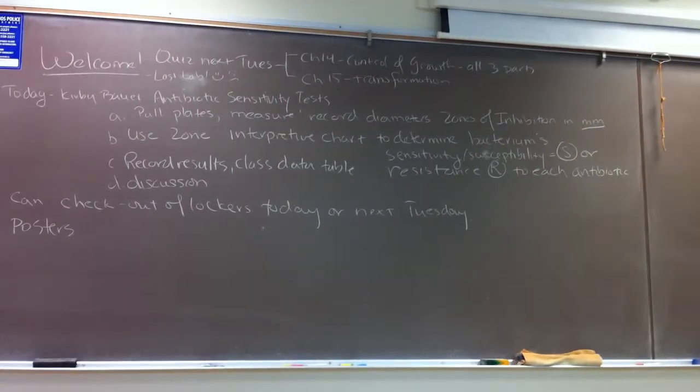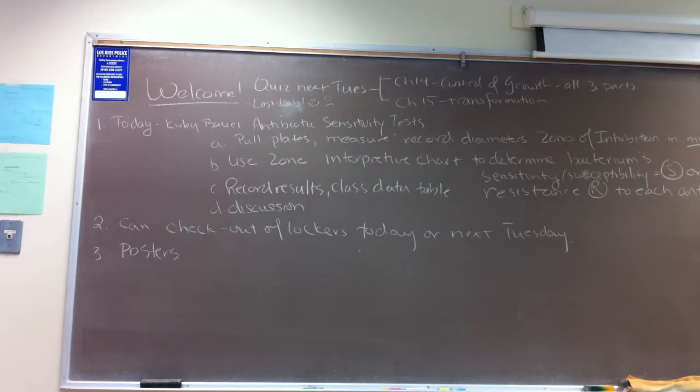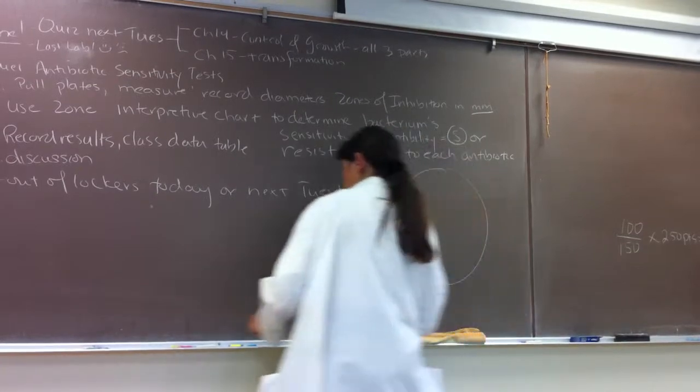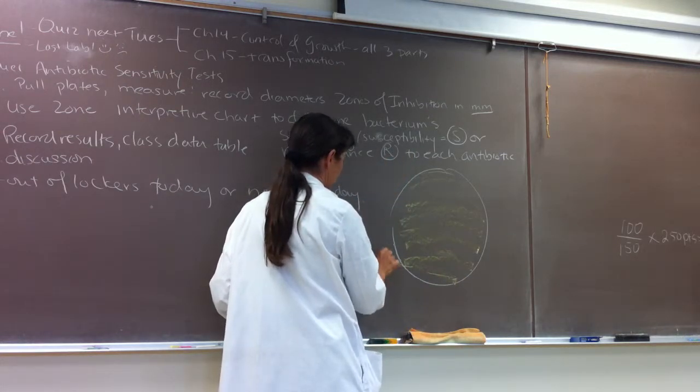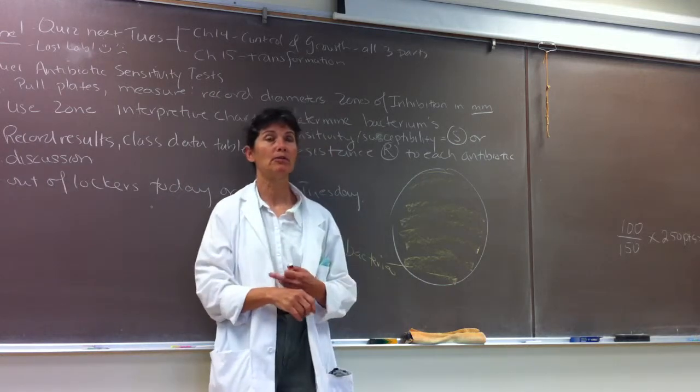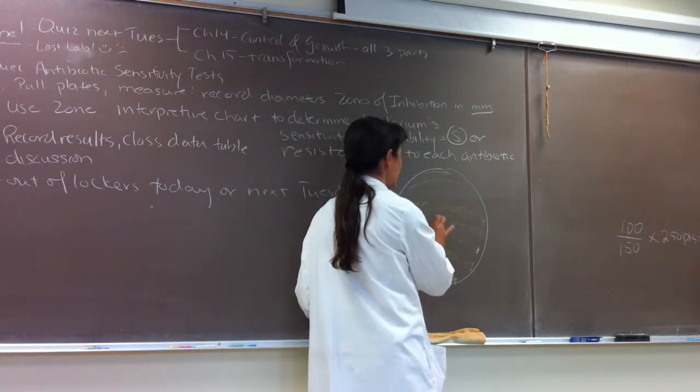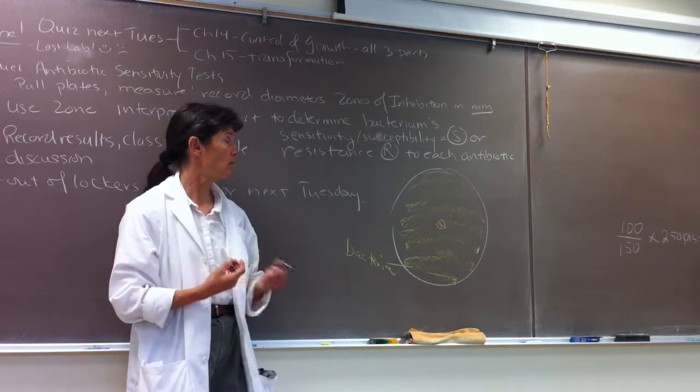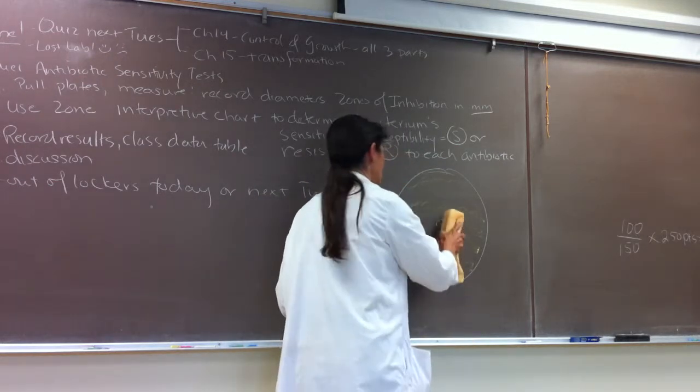So what we're going to do today then is we're going to do our follow-up on Chapter 14, Control of Growth. So this is Part 3. This is the Kirby-Bauer Disc Diffusion Antibiotic Sensitivity Test. And the good news is you'll be repeating what you did last time. And that is, you're going to be measuring the diameter of the zones of inhibition. So let us presume that yellow represents your bacteria. So these are your bacteria. And you guys recall that you put these commercially prepared filter discs that had been soaked in specific antibiotics. So let's just pretend this is my ampicillin disc, AM.